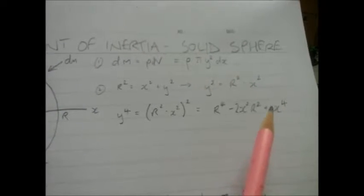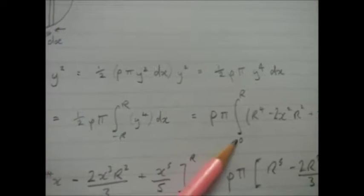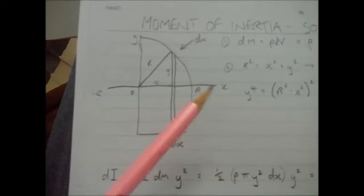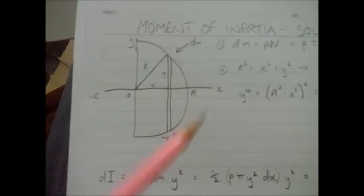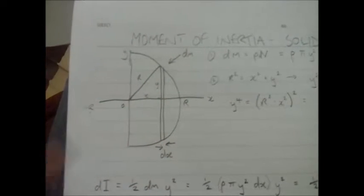So I want to substitute that back in down here, look. And I also change the limits from zero to R - that means I'm doing a hemisphere and I just need to double the answer to get the moment of inertia for the whole sphere because it's a symmetrical object.